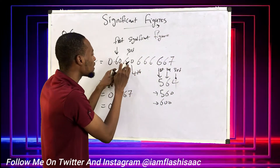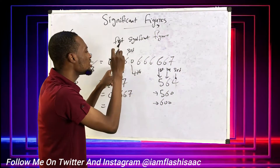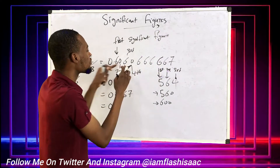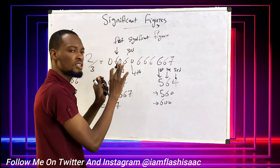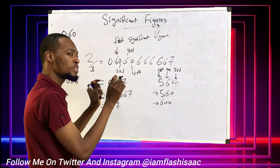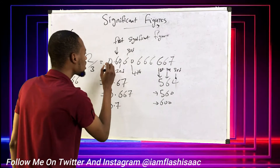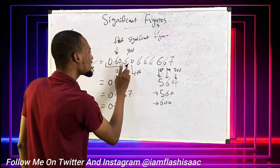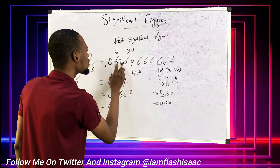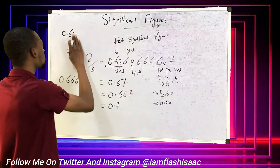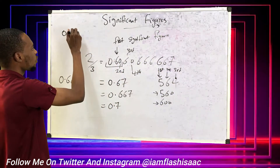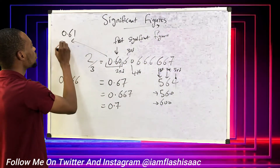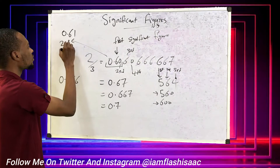So when the next number is five and above, you approximate. You should know approximation by now. So this second significant figure — this thing will end here, but because the next digit is six, we simply add one to this. This becomes one. So this is this value to two significant figures.